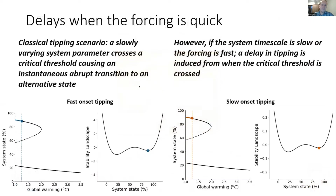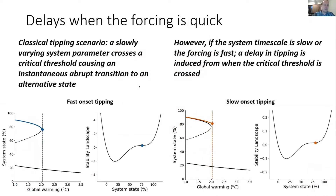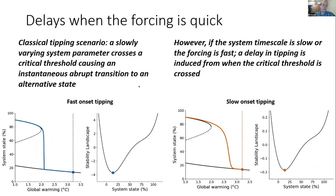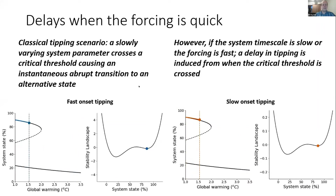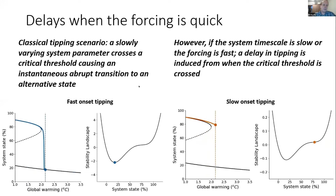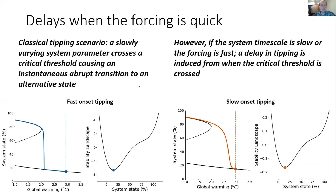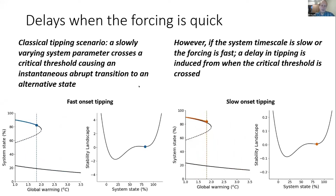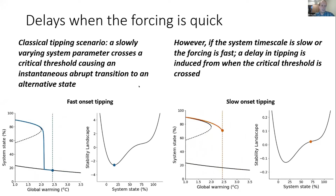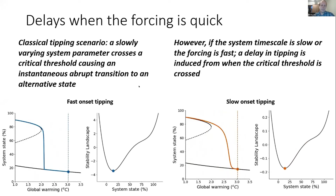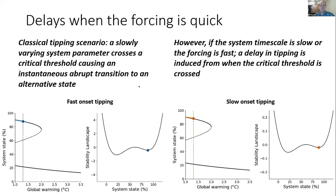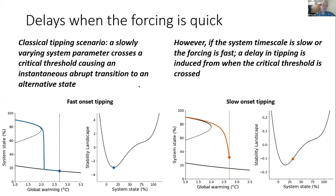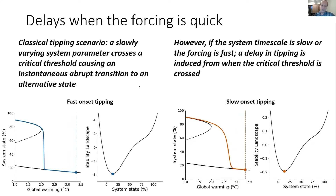On the left here is an animation of what many would consider the classical tipping scenario: there is a critical threshold in some forcing parameter — for this talk I'll assume it's global warming — and once the system passes this critical threshold, we observe an instantaneous abrupt transition to an alternative state. We can view this in the stability landscape, where the wells represent stable states and the ball represents the current state. As we approach the critical threshold, our current well shallows and deforms, and at the threshold it vanishes, causing the ball to transition to the left-hand well.